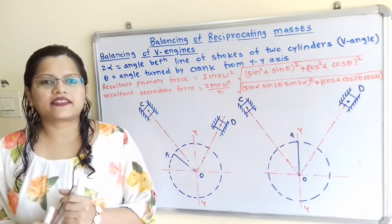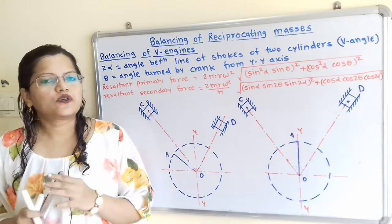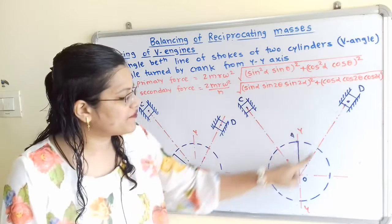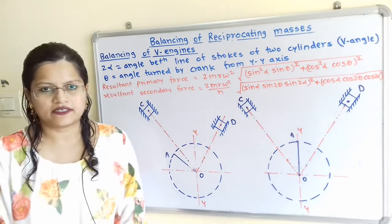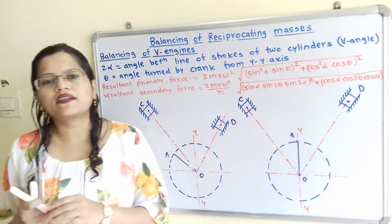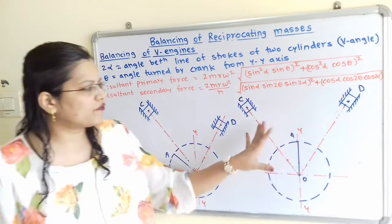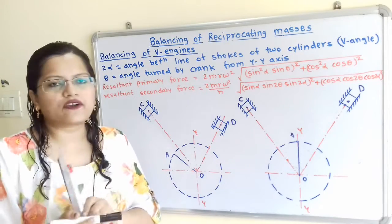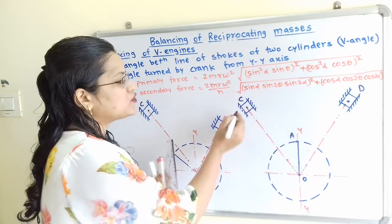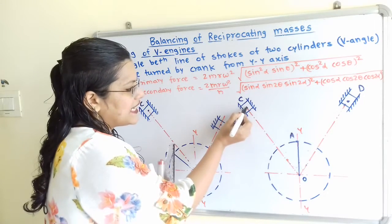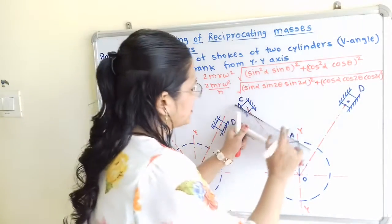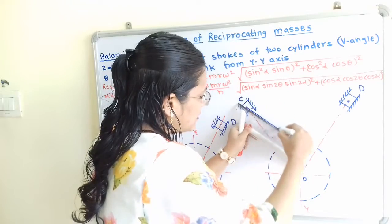Let us understand the concept of a V engine. It is a two-cylinder engine where the line of strokes of the two cylinders forms a V shape at the center of the crank. The connecting rods for both cylinders share a common connection at the crank pin. In the diagram, crank OA lies on the vertical line YY, and the connecting rod for cylinder 1 is C to A.